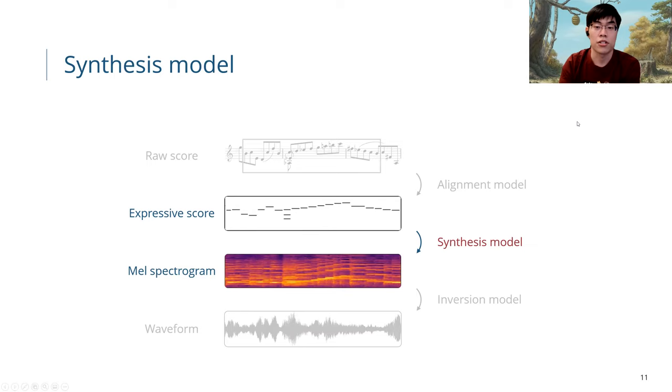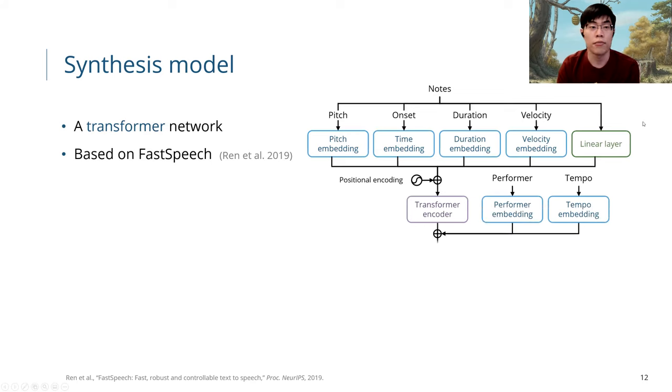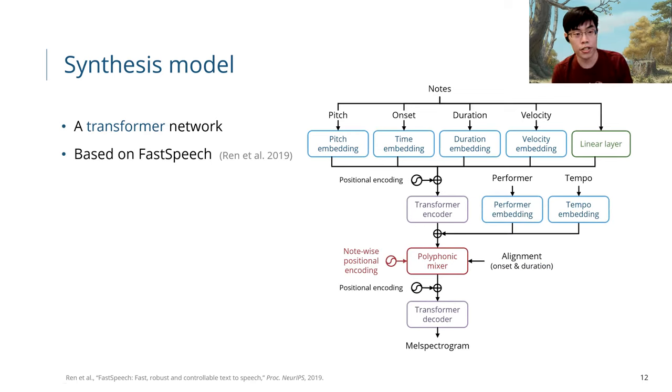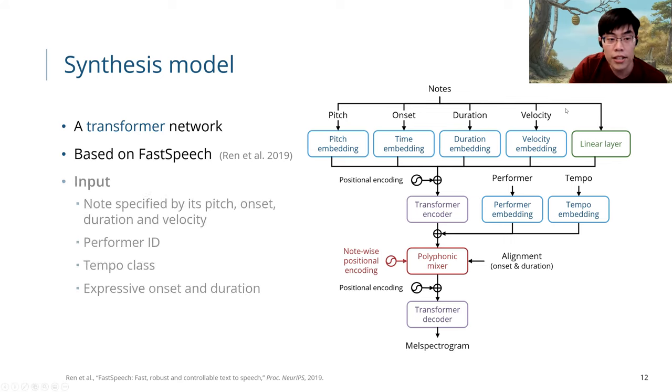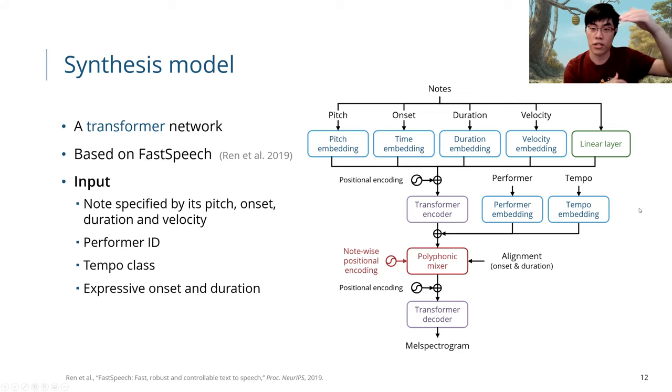Next we will talk about the synthesis model, which is the main part of this system. Here we take the expressive score and try to generate the mel spectrogram. We base our model on the transformer network, and it's based on the FastSpeech model that is proposed for text-to-speech synthesis. Again, we have the input as a sequence of notes specified by its pitch, onset, duration, and velocity, and we also have performer ID and tempo class. Now the problem is that our output is a mel spectrogram and the input is a sequence of notes, so there is a misalignment between them. In addition to the typical transformer encoder-decoder, we need an additional model in between for the alignment from a sequence of notes to a sequence of mel spectrogram frames.